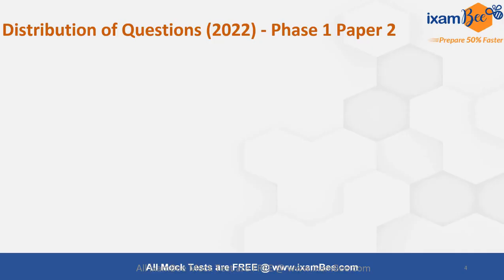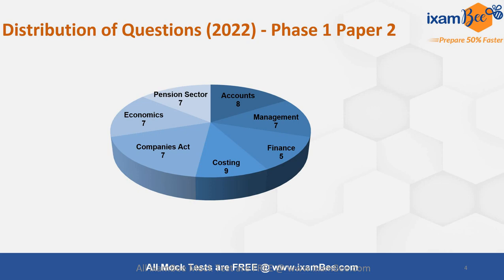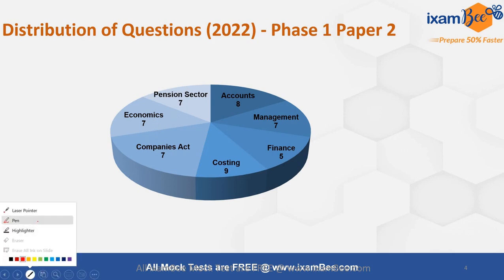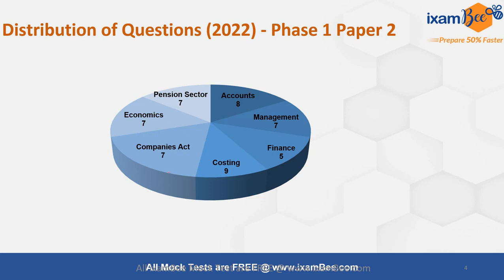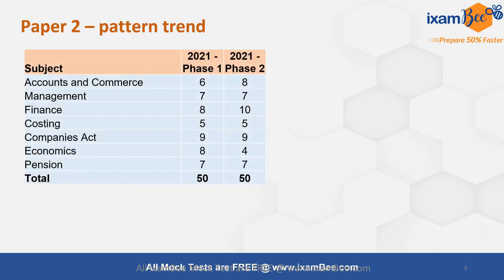If I talk about the distribution of questions in Paper 2, they were very well distributed: 8 questions from accounts, 7 from management, 5 from finance and costing, 9 from Companies Act, 7 from economics, and 7 from pension sector. It was a very well-distributed question paper touching almost all aspects of the syllabus.